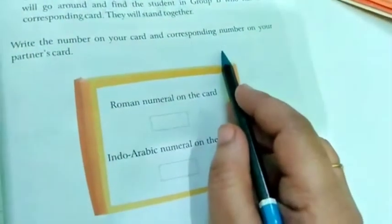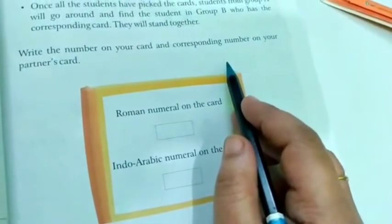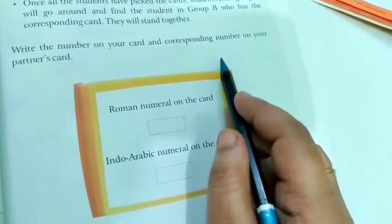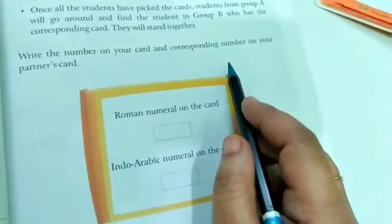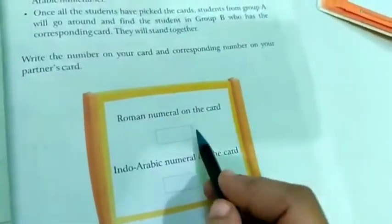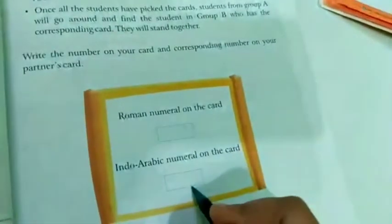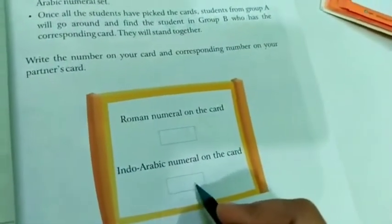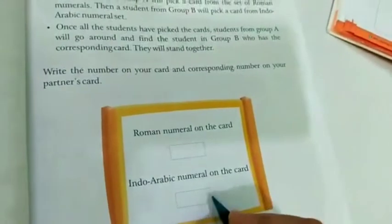Write the number on your card and corresponding number on your partner's card. So you have to make the cards. You have to write the numbers 1 to 15 in Indo-Arabic and also in Roman numerals. So you have to make two groups. Write one number in Roman and the same number in the Indo-Arabic numerals.